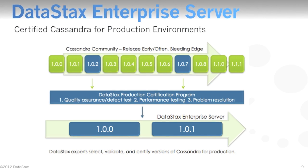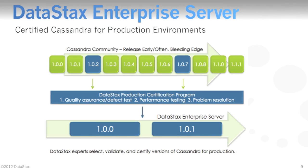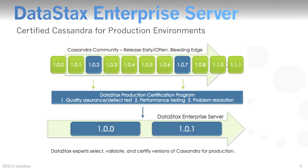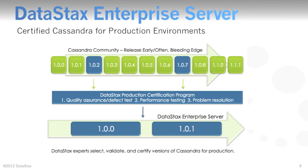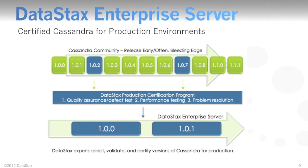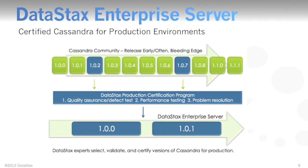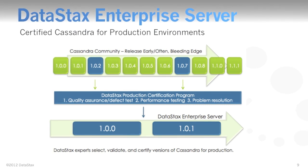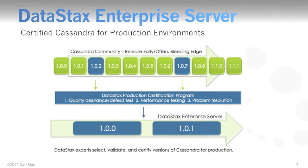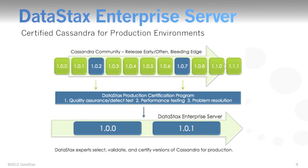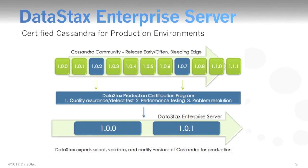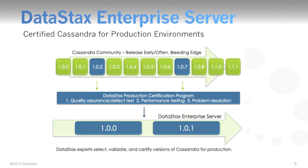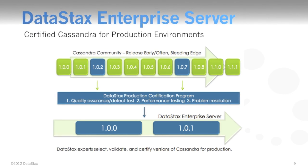Because Cassandra is open source, new community releases and patches are produced very quickly, with the understanding that community builds aren't put through any enterprise-styled quality assurance process and often contain a mixture of enhancements and bug fixes. By contrast, DataStax Enterprise only contains selected Cassandra releases chosen by the expert staff and committers at DataStax. Each chosen release is put through a rigorous certification process designed by DataStax engineers and QA staff to ensure it's stable and ready for enterprise production systems. Any found issue is immediately fixed and applied to the DataStax Enterprise server.